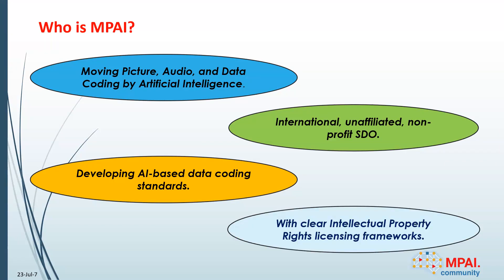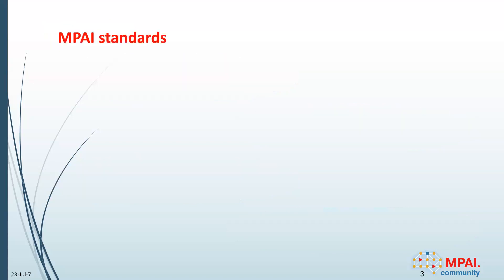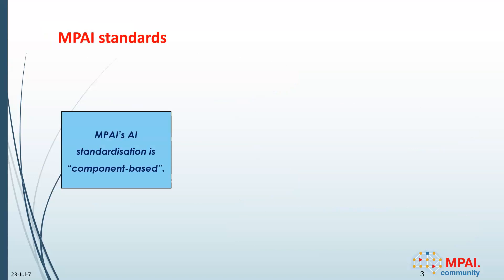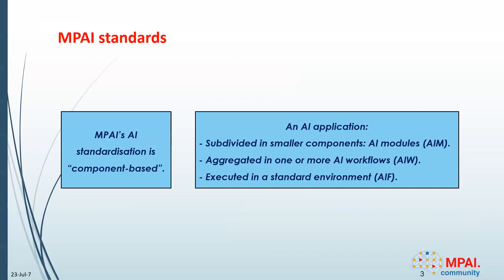What is important is that we wanted to attach, to the extent possible, clear intellectual property rights licensing frameworks. The basis of our standardization approach is the use of components. We have a big or small AI application and we try to subdivide it into smaller components. We call the components AI modules, which we aggregate in one or more AI workflows to serve particular purposes, and we execute the workflows in a standard environment called the AIF.